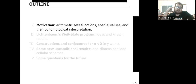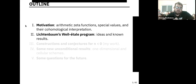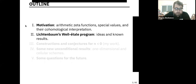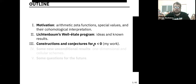This is a really deep topic with a really rich history, so I can't give a really proper historical introduction here. I will just give a few examples to motivate all this stuff. Then I'm going to talk about Lichtenbaum's Weil-étale program, the main ideas behind the so-called Weil-étale homology and the results up to this point. And then I'm going to talk about some constructions and conjectures in the particular case of the special value at negative integers.